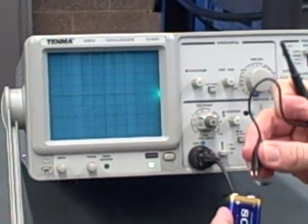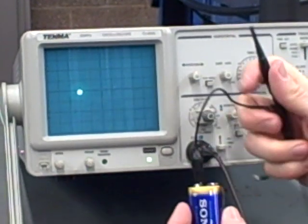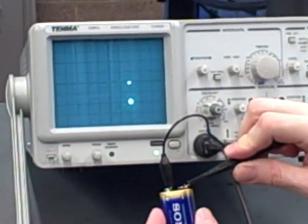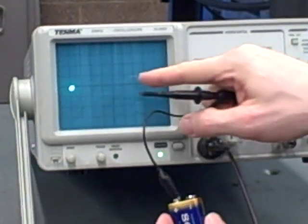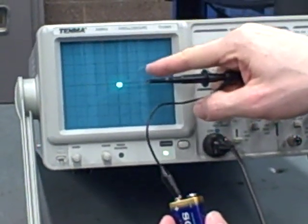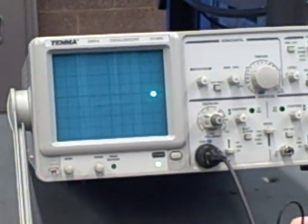And of course if I switch the polarity, if I put the ground clip on the positive and move this to the minus side, it makes the dot go down. So a positive voltage drives the dot up and a negative voltage drives it down. Pretty simple, pretty straightforward.